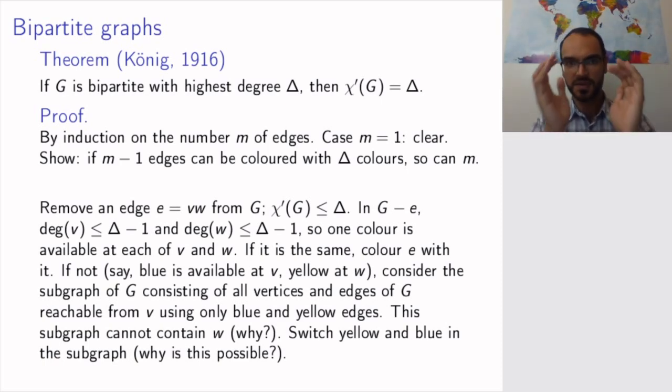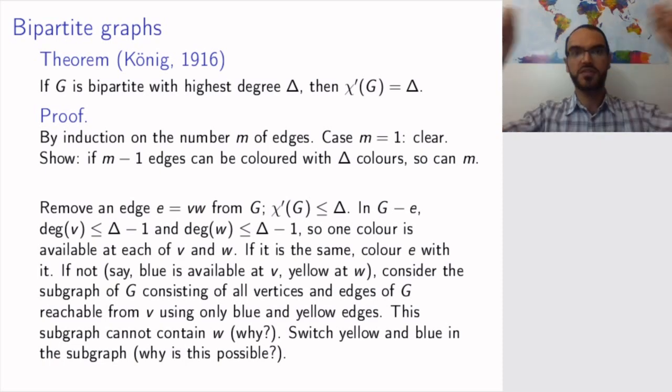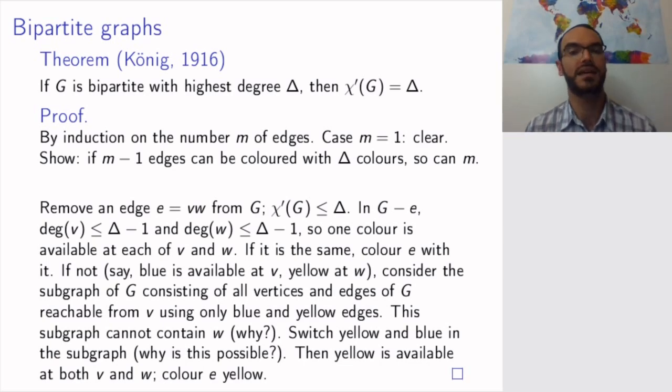But the reason I can do it for this subgraph is the subgraph is everything that is reachable with yellow and blue edges. This subgraph has nothing connecting it to the rest of the graph with yellow or blue edges. So in this minor world, I can change the colors of blue and yellow. Now suddenly yellow rather than blue becomes available at v. So I am again in a situation where v and w have the same color available and I can color my missing edge yellow.